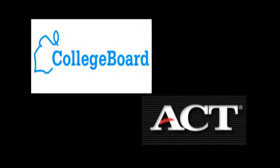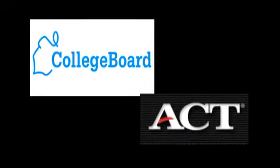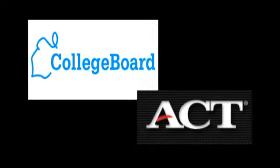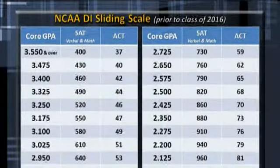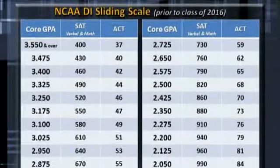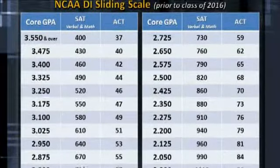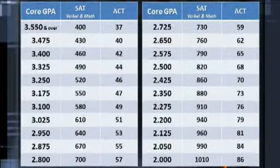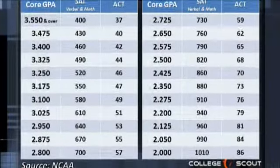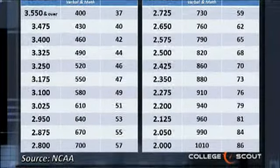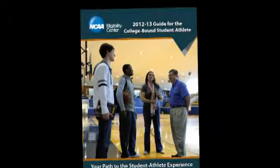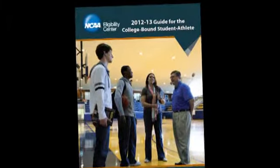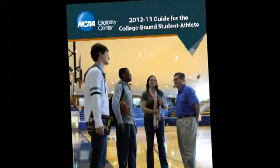You must also achieve a qualifying SAT or ACT score. The required score depends on your core GPA. The NCAA uses a sliding scale to determine your qualifying core GPA and SAT or ACT score — the better your core GPA, the more wiggle room you have on the test, and vice versa. You can find the sliding scale in the NCAA Guide for the College Bound Student-Athlete, which can be downloaded directly from the Eligibility Center website for free.